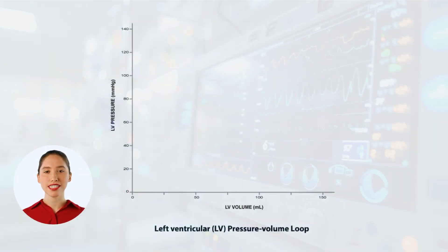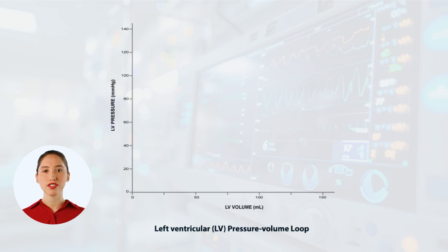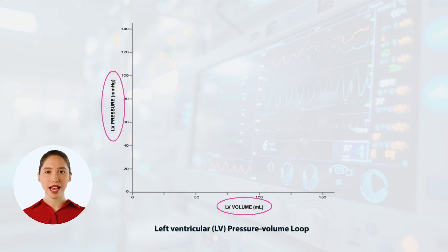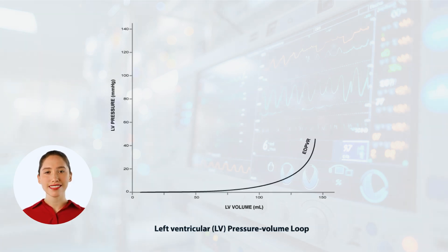To understand afterload, let's begin with a pressure-volume loop, a fundamental concept in cardiology that helps us visualize the heart's function during a cardiac cycle. Here we have volume on the x-axis and pressure on the y-axis. Let's sketch out the pressure-volume loop. We'll start with two important lines: the end-diastolic pressure volume relationship, or EDPVR,